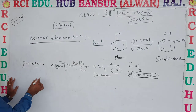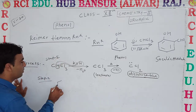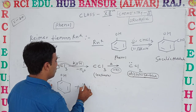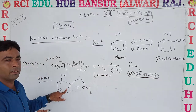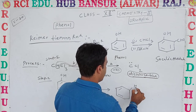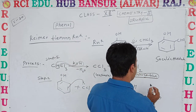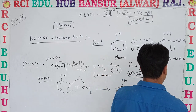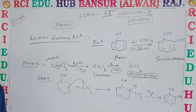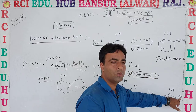Dichlorocarbene then reacts with phenol — the aromatic phenol compound attacks the dichlorocarbene (CCl2). As the attack occurs, the compound attaches, giving an intermediate with CHCl2 group. Then when we carry out the reaction with water (H2O) in aqueous medium, the CHCl2 group converts to a CHO group. This gives the final product — salicylaldehyde — that is called salicylaldehyde.